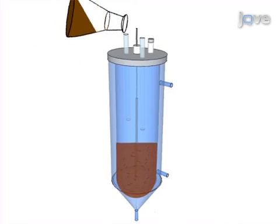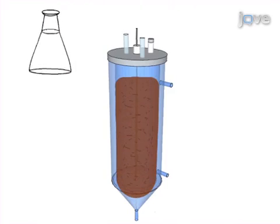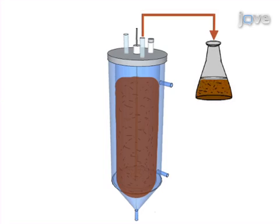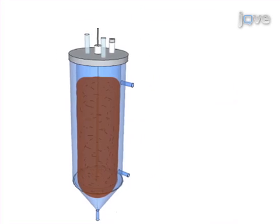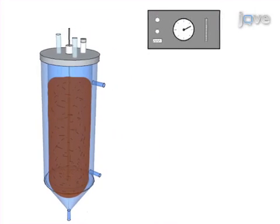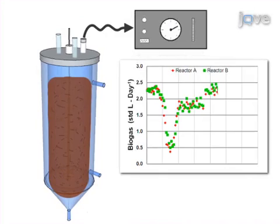Inoculation is done with active methanogenic biomass by establishing a suitable anaerobic environment within the bioreactor system. Then the proper operation of the digester system is described, including effluent decanting, feeding, and troubleshooting. The final step is to introduce a monitoring strategy to assess digester performance and stability using standard analyses conventionally used in the field of anaerobic biotechnology.